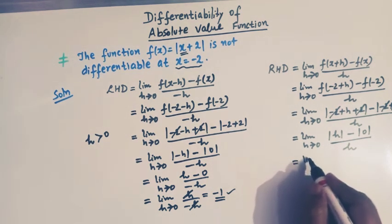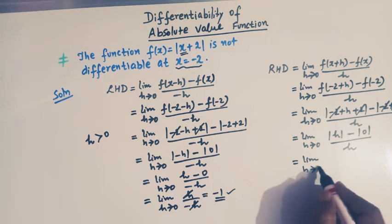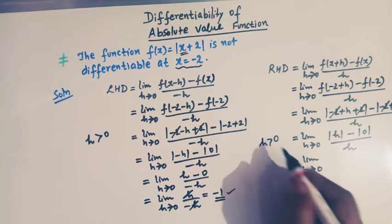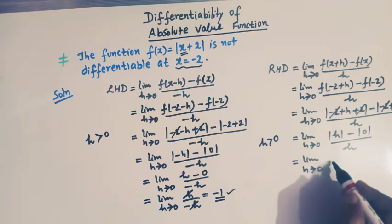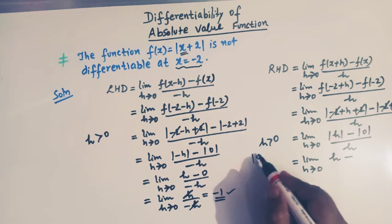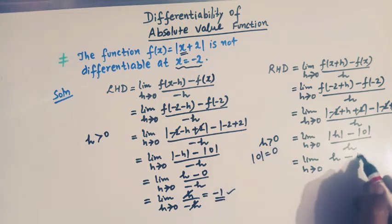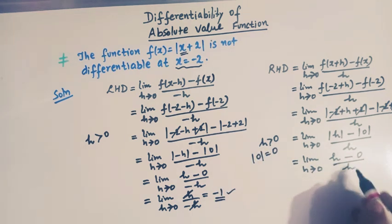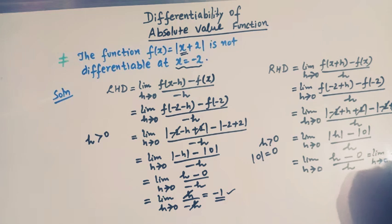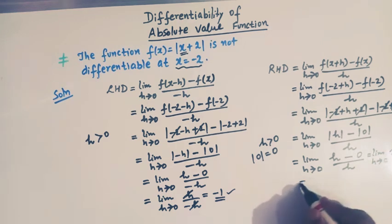Since h > 0, |h| = h and |0| = 0. So we have limit h→0 of h / h, and h and h cancel, giving 1.